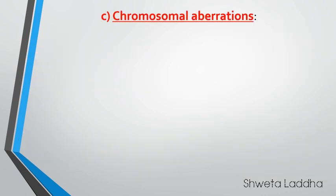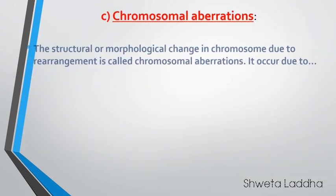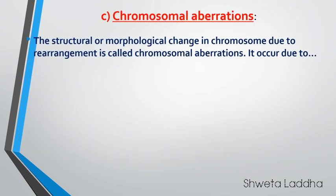Third, very important, are chromosomal aberrations. These are structural or morphological changes in chromosomes. Rearrangements causing structural or morphological changes in the chromosome are called chromosomal aberrations. There are four types of chromosomal aberration. The first is deletion.